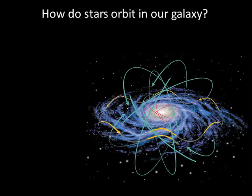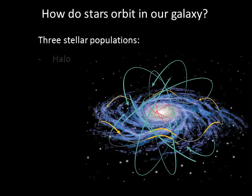Now that we know a little bit about what the Milky Way looks like, we can talk about how the stars move in the galaxy. We'll divide the stars up into three general populations: halo, disk, and bulge.